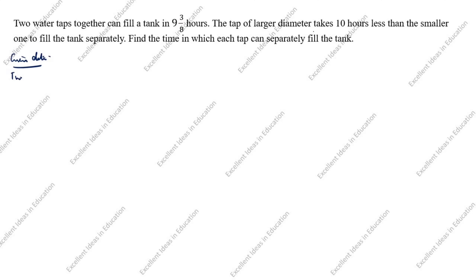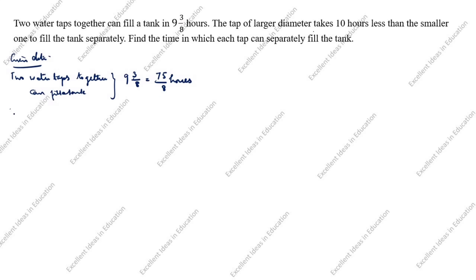Given data: two water taps together can fill the tank in 9 and 3/8 hours. This is a mixed fraction. We simplify: 9 × 8 = 72, 72 + 3 = 75, so the time is 75/8 hours. For 1 hour, both taps together fill 8/75 of the tank.